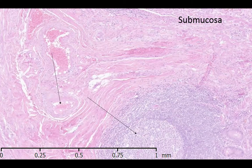Now you can see that we shifted to the next layer of the appendix, which is the submucosa. This layer demonstrates abundant lymphoid tissue with lymphoid nodules and aggregates. These lymphoid aggregates are thought to produce IgAs, which help to assist in handling toxins within our gut.